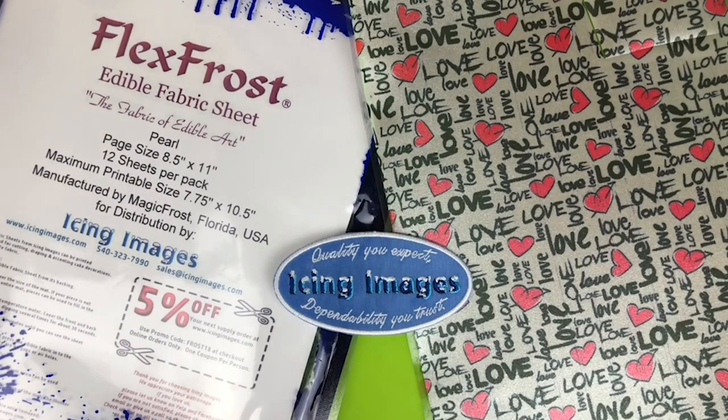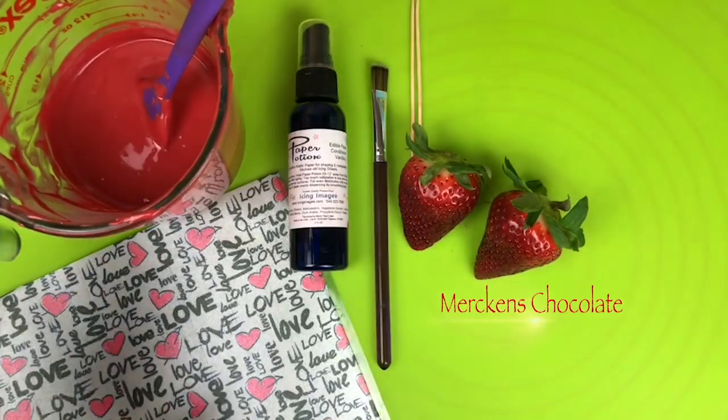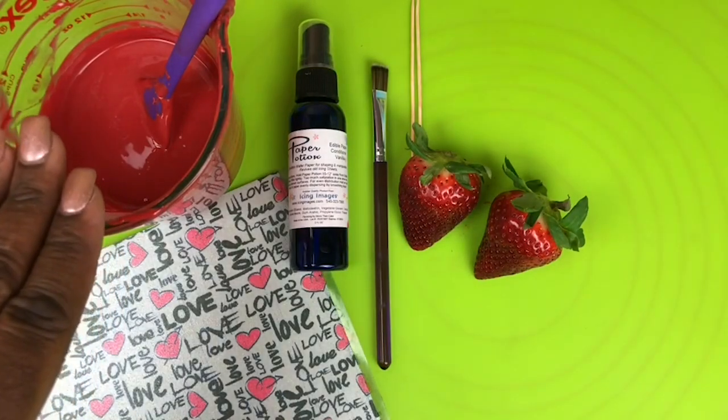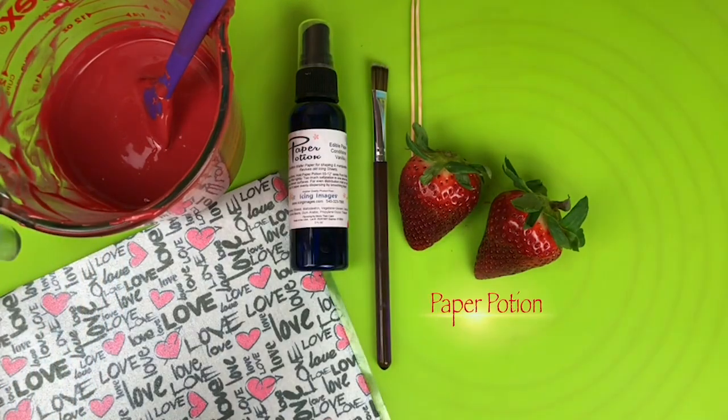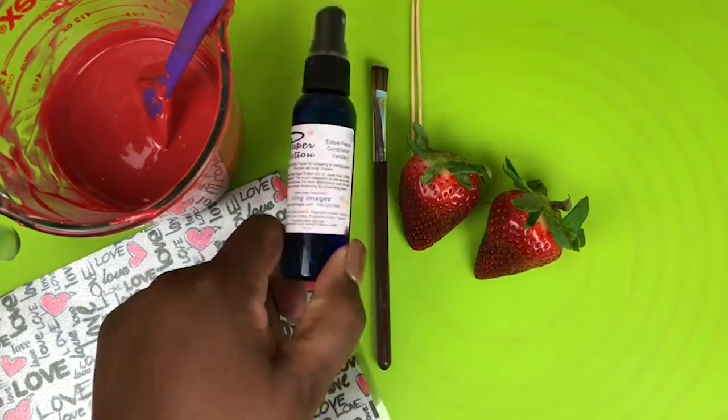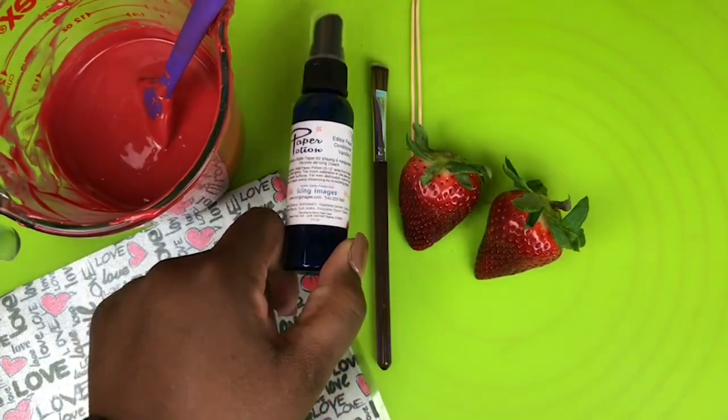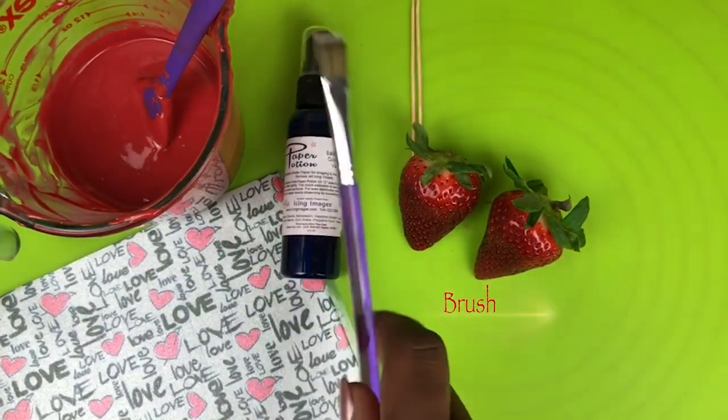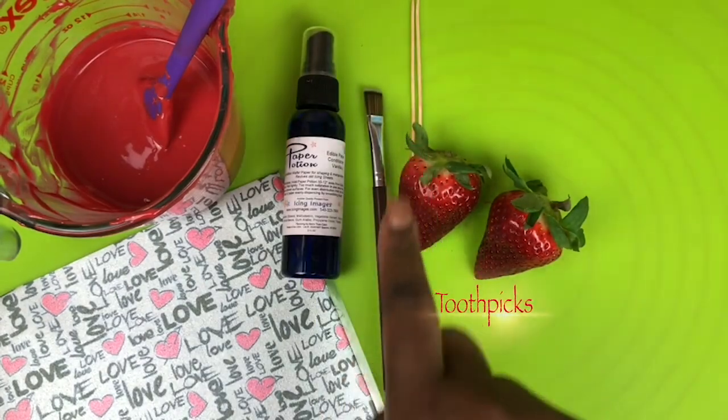So brought to you by Icy Images, I am going to be using what is called a flex frost sheet, some chocolate that's already melted, and I'm going to be using some paper potion to help with the application which is also by Icy Images.